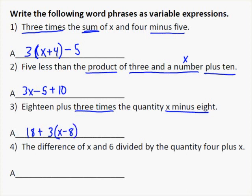The last one says the difference of x and 6 divided by the quantity 4 plus x. The first thing is the difference of x and 6. The difference is always parentheses and always subtraction, so you do it in the order given: x minus 6 divided by, and then quantity means parentheses, and what's in the quantity is 4 plus x. The other way you could have written this is as a fraction: x minus 6 over 4 plus x.